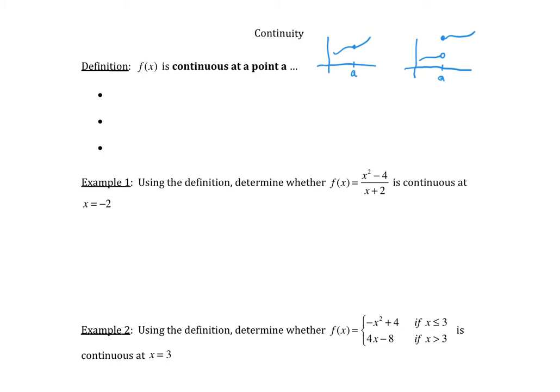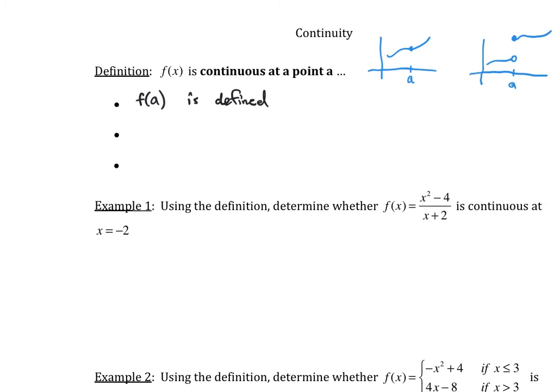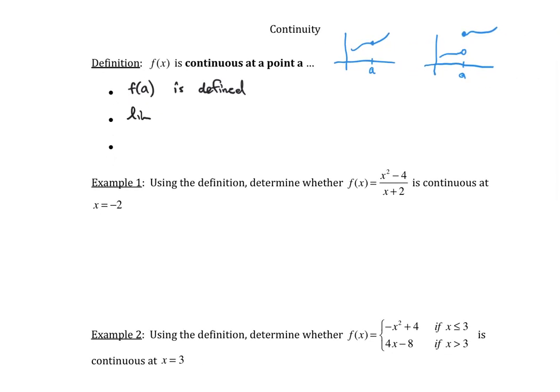The way that we're going to formally define it — there are three pieces to the definition. The first piece is that you need f of A to be defined. The second part of the definition is that when you take the limit as x goes to A of f of x, this limit exists.